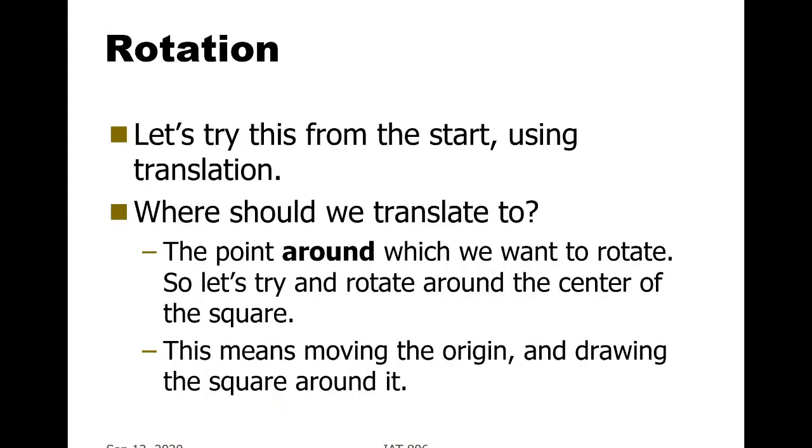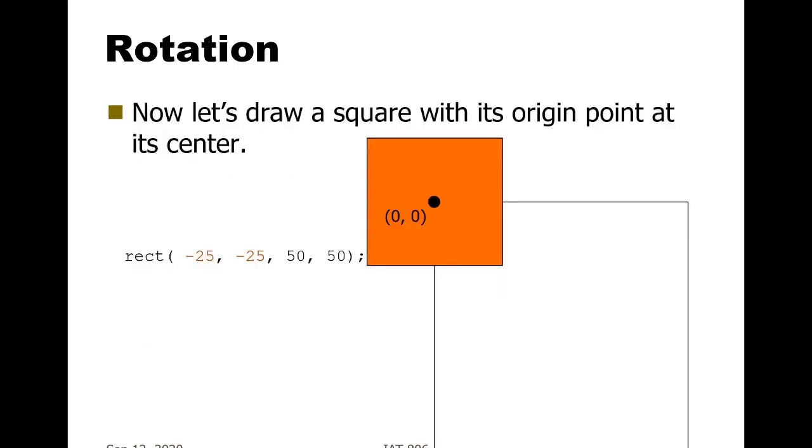If we wanted to try this from the start and add translation, what we should be able to do is translate the location about which the rotation happens. If you want to rotate about a different location in the coordinate system, what you need to do is translate first. That moves the coordinate system and therefore also moves the location where subsequent rotates take place. Let's try to rotate around the center of the square. This means moving the origin and drawing the square around it.